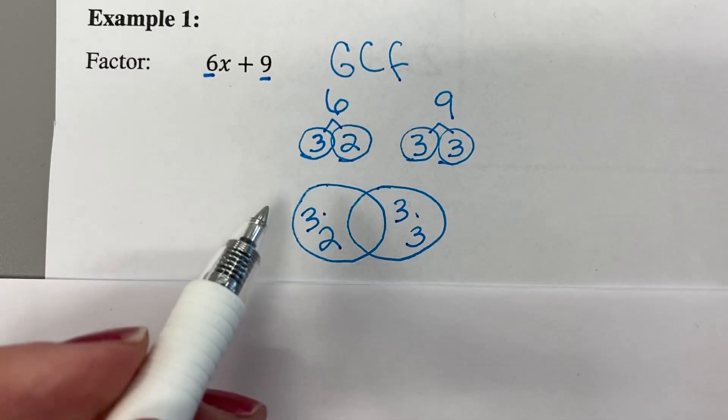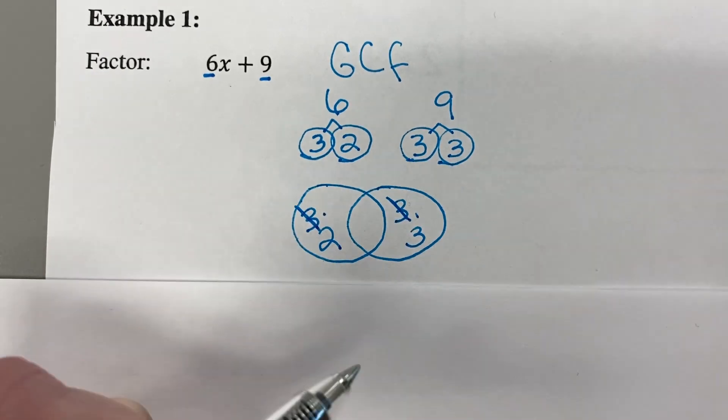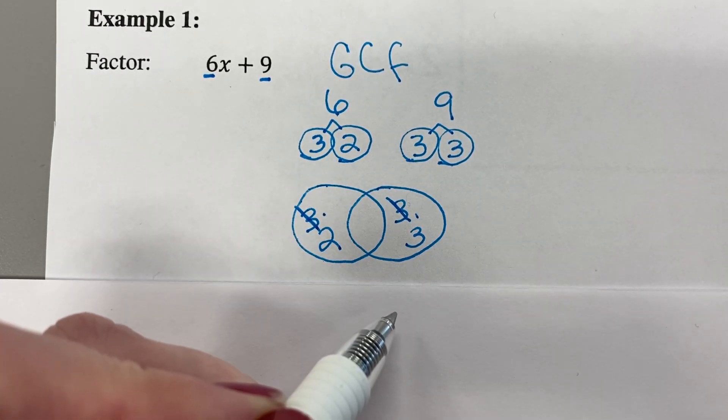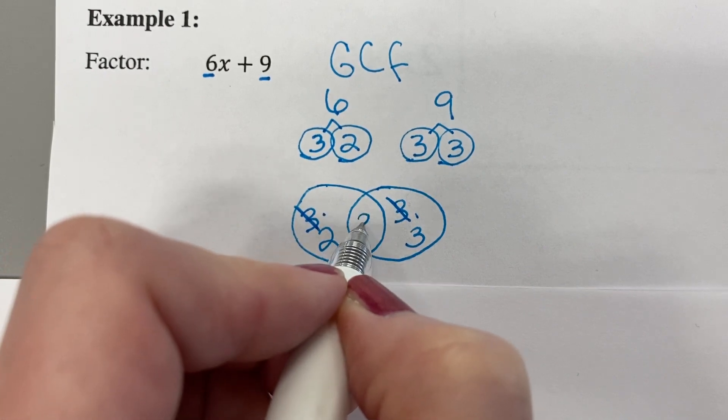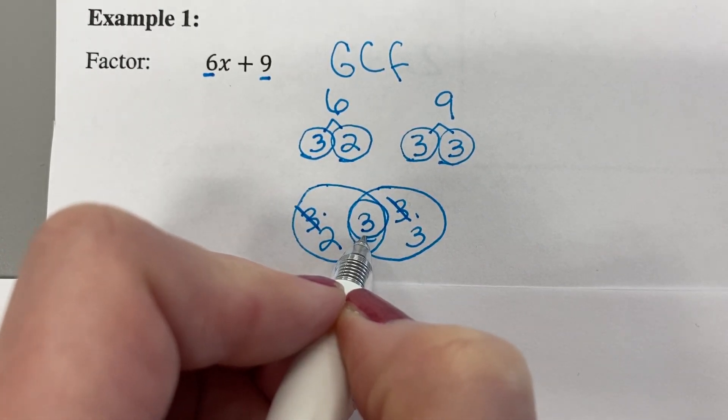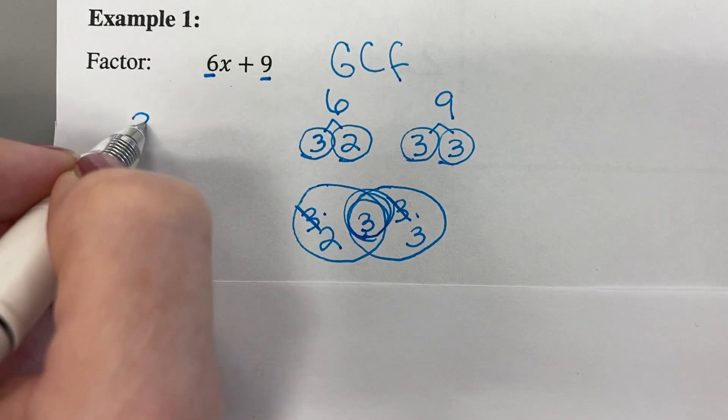Okay. So now what do they have in common? Well, they have a 3 in common for sure. And that's about it. This extra 3 here can't join forces with anyone. So we'll say the GCF is 3. Now watch what I do. You take that GCF, bring it over here.